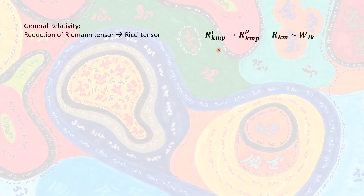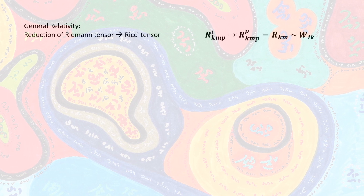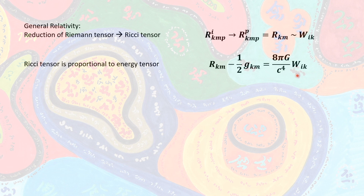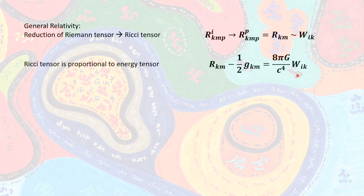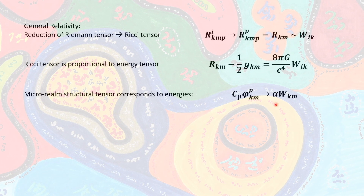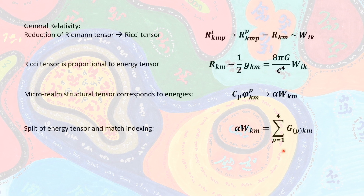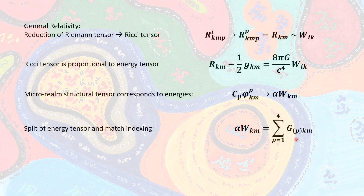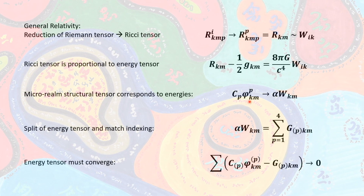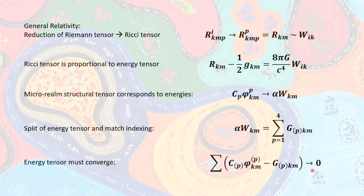Now let us have a look at the Riemann tensor. If we reduce the Riemann tensor by its index p, we obtain the Ricci tensor, which is proportional to the energy tensor — familiar from the main equation of general relativity. The microscopic structural tensor must correspond to the uniform energy tensor in the microcosmos, or rather be proportional to it. We split this energy tensor into four parts, one for each dimension, using the symbol G with the corresponding index p, and say that both sides converge — that is, their difference approaches zero.